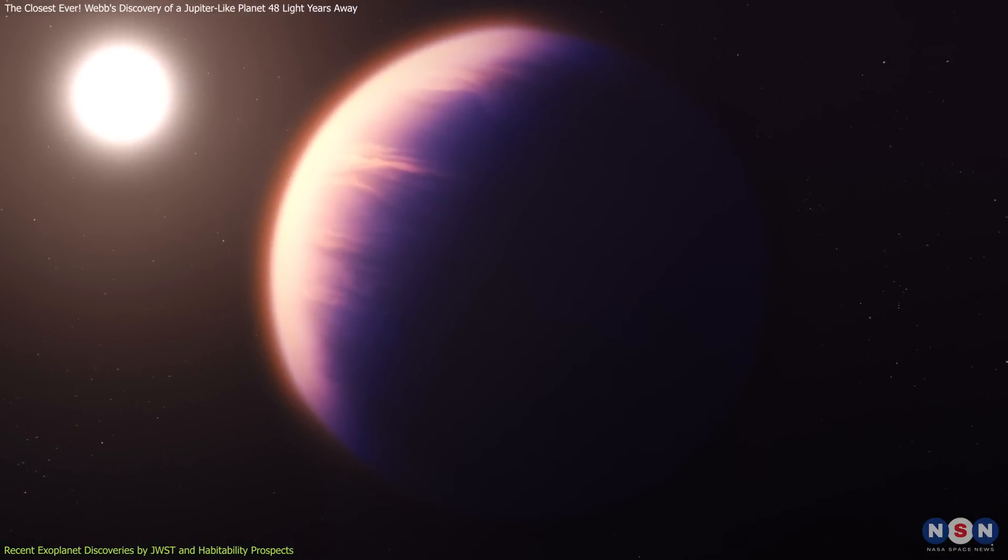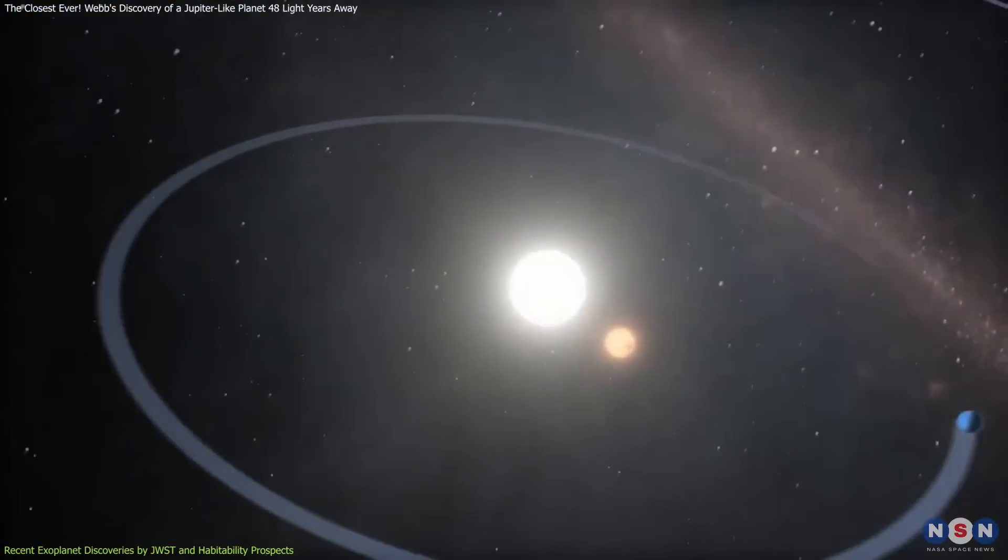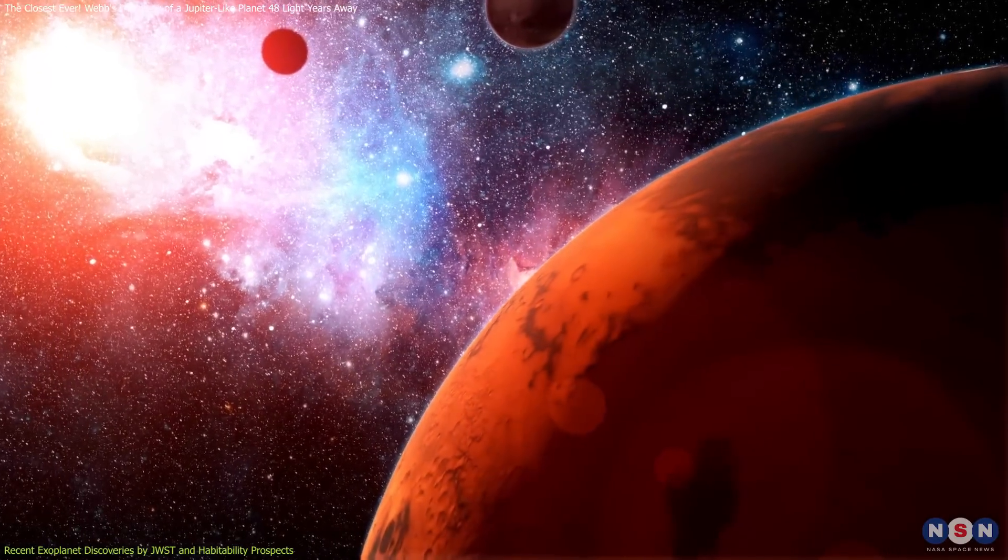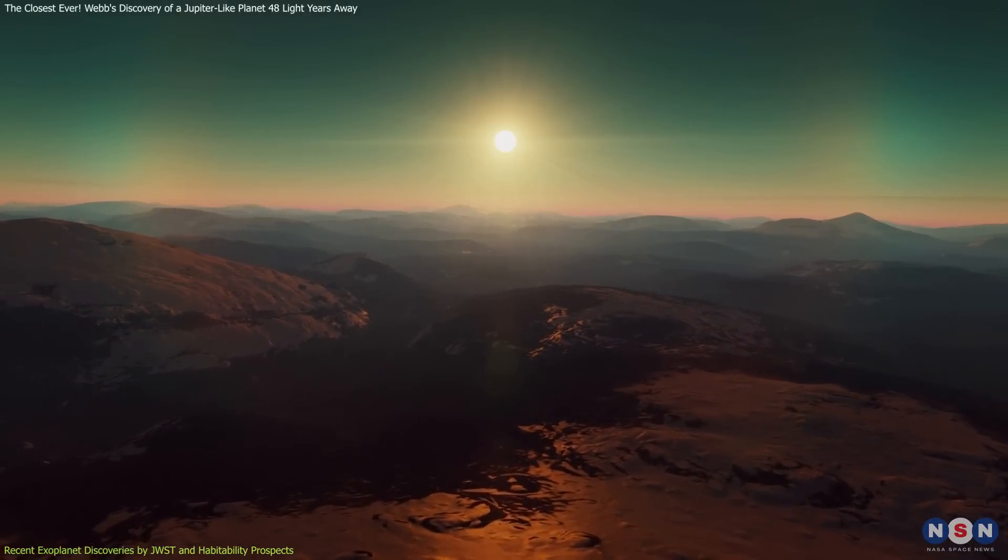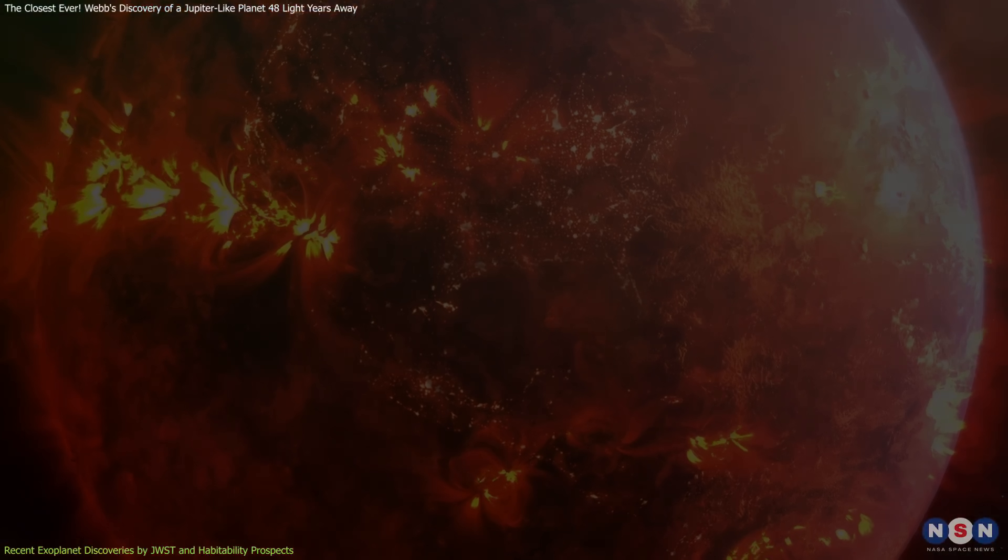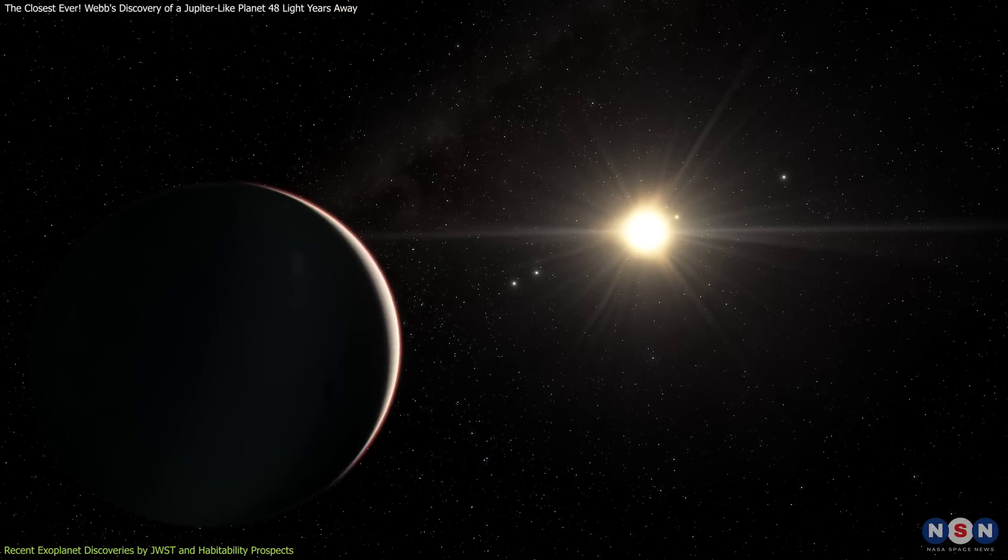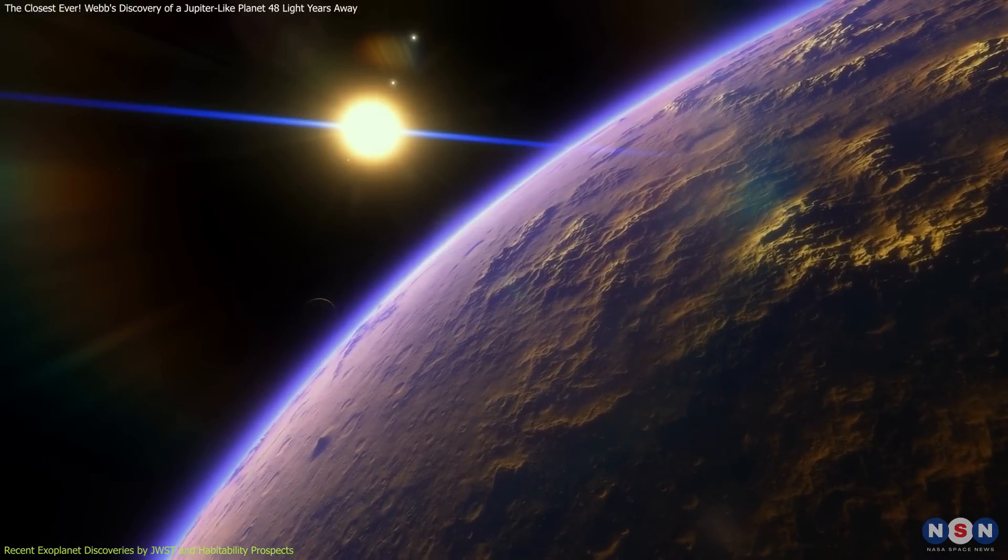However, as seen with planets like WASP-39b and WASP-96b, even planets far from the conventional habitable zone may host atmospheres with complex chemistries due to their dynamic interactions with solar radiation and internal heat. These observations from Webb are not just deepening our understanding of individual exoplanets, but are also refining our models of how habitable conditions might emerge.